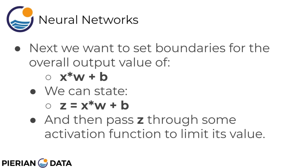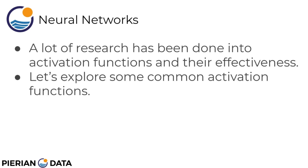Next, we want to set boundaries for the overall output value of that combination x times w plus b. To keep things simple, we can state z is equal to x times w plus b, and then we can pass that term z through some sort of activation function to limit its value. Keep in mind a lot of research has been done into activation functions and their effectiveness. We're going to explore some really common activation functions and then show you the Wikipedia page which displays and lists a lot more.